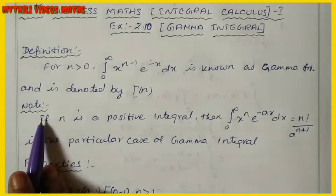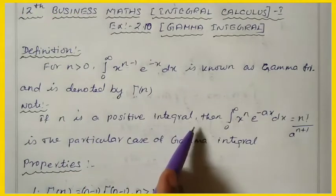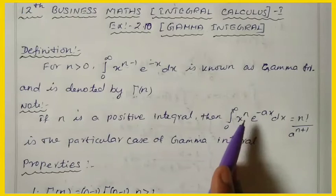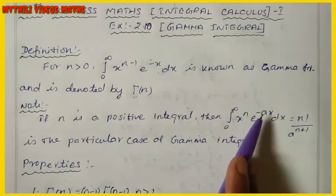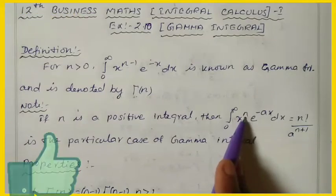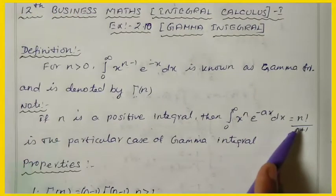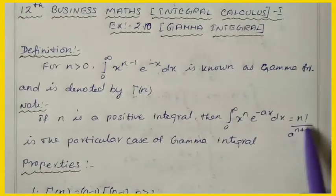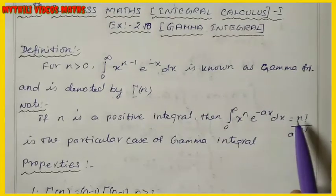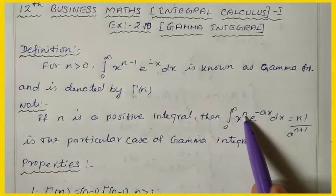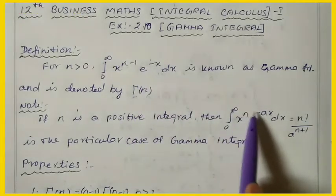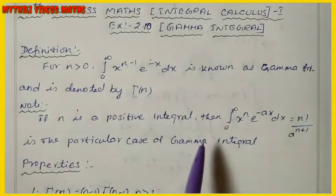They have given a note: if n is a positive integer, then the integral from 0 to infinity of x to the power n, times e to the power minus ax, dx equals n factorial divided by a to the power n plus 1. We use this formula when n is positive. If n is negative, we use a different approach.